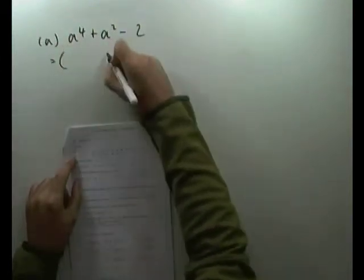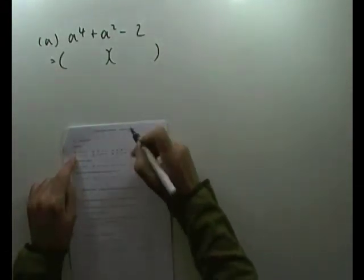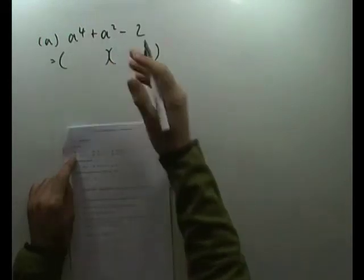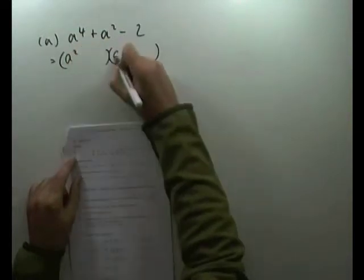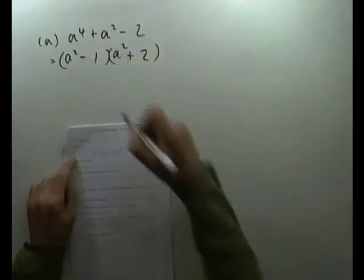a to the 4 plus a squared minus 2. Easy enough because it is just a quadratic, only it's not a quadratic in a, it's a quadratic in a squared, or specifically in a squared and a constant. So that would just be a squared times a squared. It'd have to be a 1 times a 2. And with a plus in the middle, it'd have to be plus the 2 minus the 1.